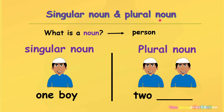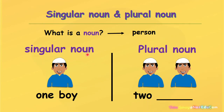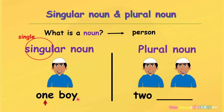Singular noun and plural noun. What is a noun? A noun is a person. For example, a boy. What is the singular noun? The singular noun means single. It means that there is one of something. For example, one boy.